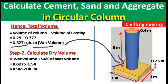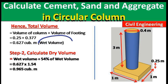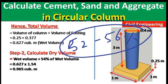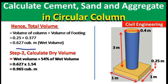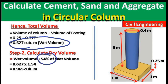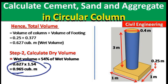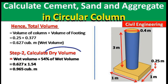In Step 2 we convert the wet volume to dry volume by adding 52–56% extra. Here we add 54%, so: dry volume = 0.627 × 1.54 = 0.965 cubic meters. This dry volume will be used to calculate the quantities of cement, sand, and aggregate.